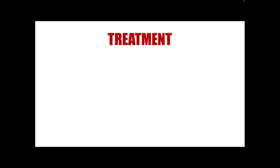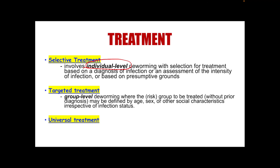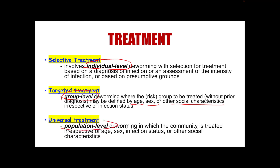Selective treatment involves individual-level deworming with selection based on a diagnosis of infection, assessment of infection intensity, or presumptive grounds. Targeted treatment is a group-level deworming where risk groups to be treated may be defined by age, sex, or other social characteristics. Universal treatment is at the population level — you treat everyone regardless of criteria, age, sex, or other social characteristics.